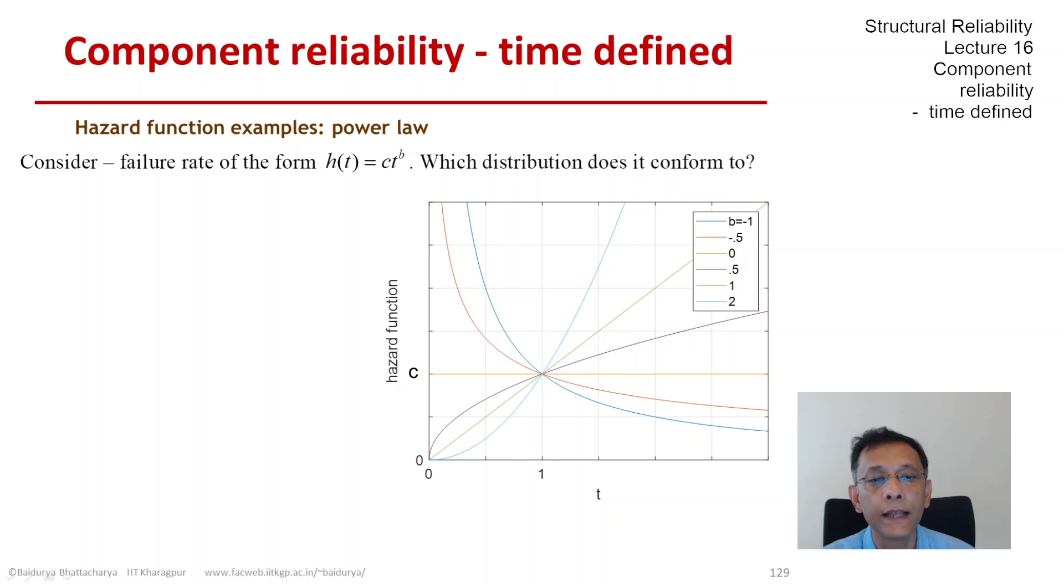But we have to be careful: is this even a legitimate hazard function? When b equals zero, we know it's acceptable because it comes from the exponential. But for other values of b, do they give rise to legitimate hazard functions, and if so, what are the distributions?